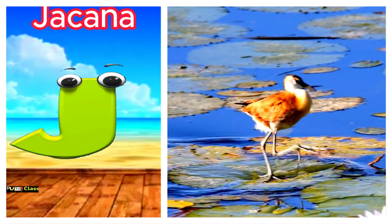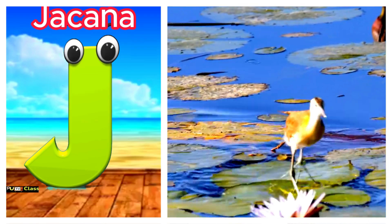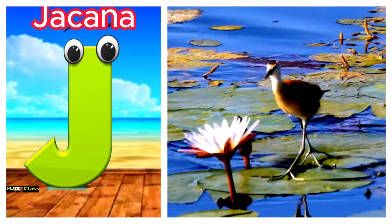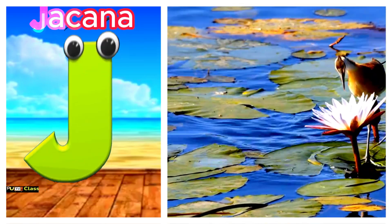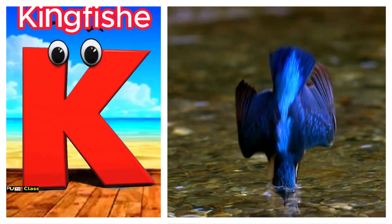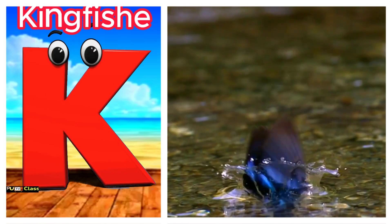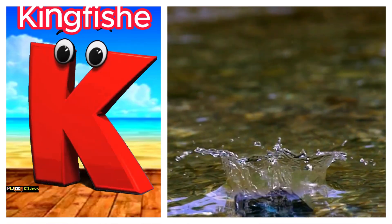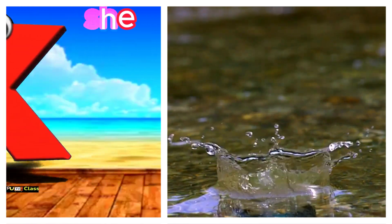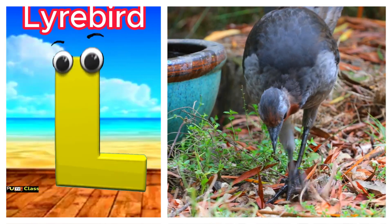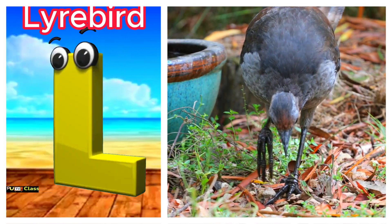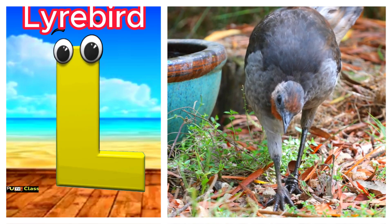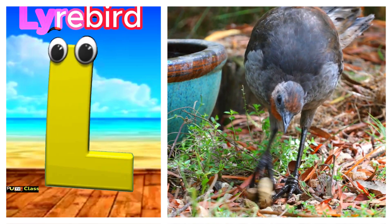J is for jacana. Juh, juh, jacana. K is for kingfisher. Kuh, kuh, kingfisher. L is for lyrebird. Luh, luh, lyrebird.